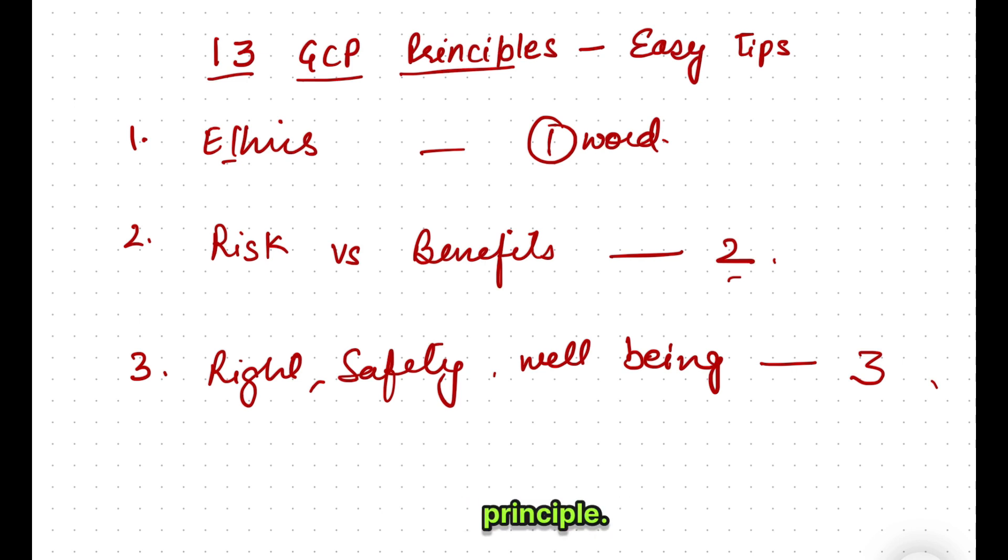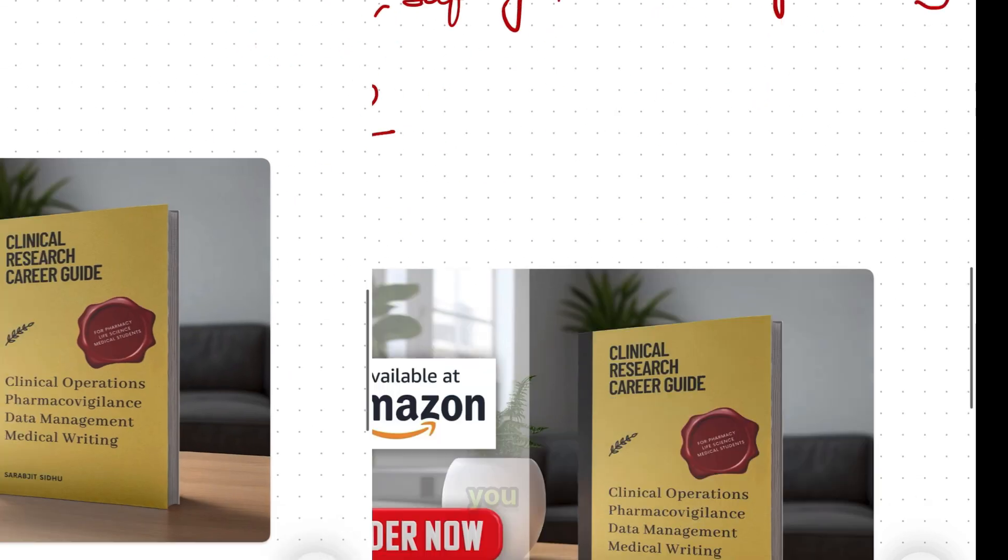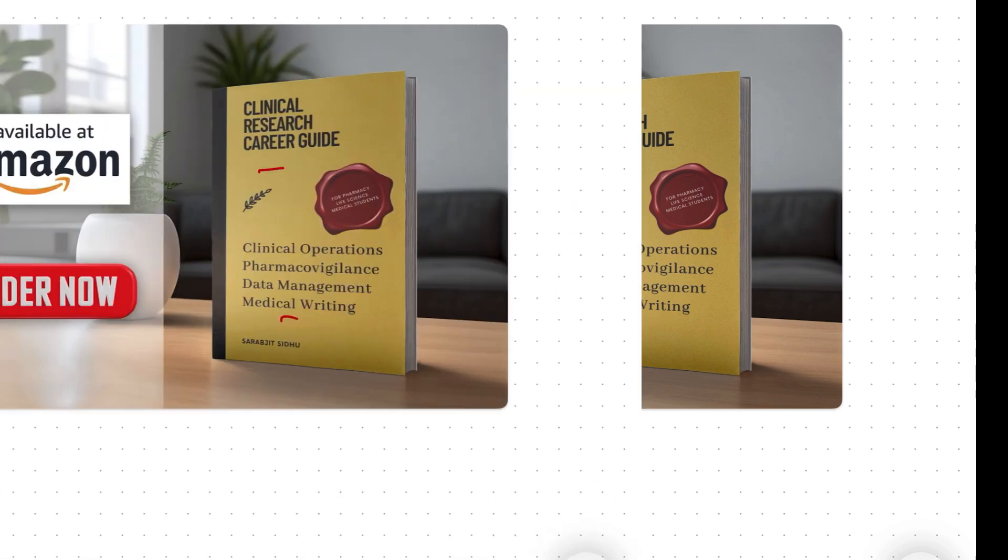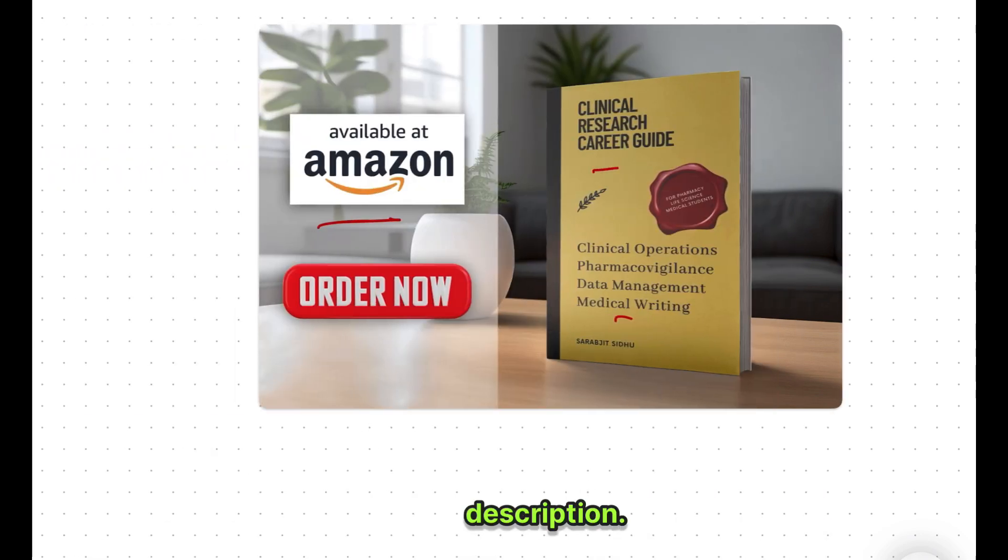Coming to the fourth principle, it's about IP, investigator product. But I will link it to another principle also, because both of these principles are on IP. Before you want to learn more about clinical research, you can refer to my book. It talks about clinical operations, pharmacovigilance, data management, and medical writing, and it's available on Amazon. Link is in the description.